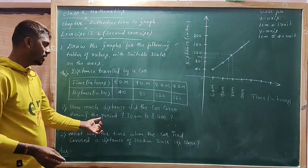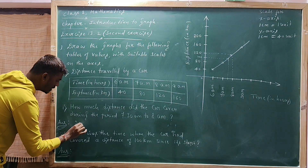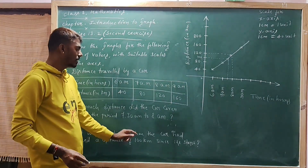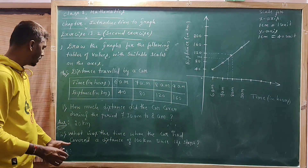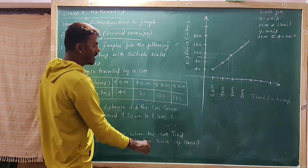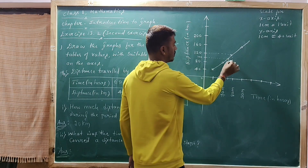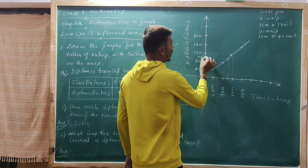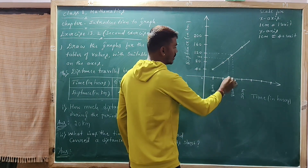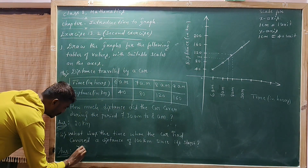The next question: what was the time when the car had covered a distance of 100 kilometers since its start? Reading from the graph, the answer is 7:30 a.m.